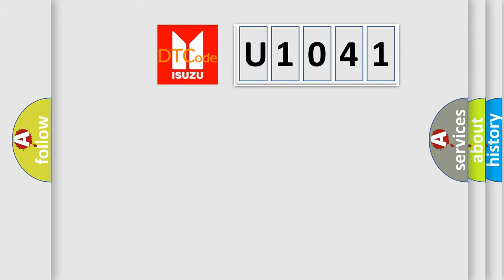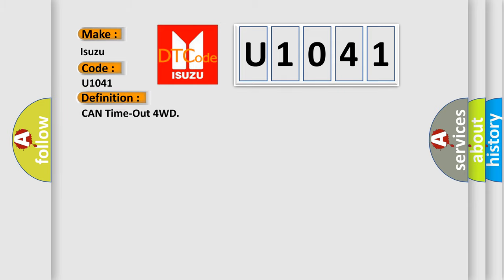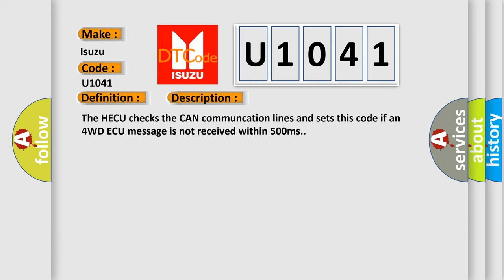So, what does the diagnostic trouble code U1041 interpret specifically for Isuzu car manufacturers? The basic definition is: CAN timeout for 4WD. The HECU checks the CAN communication lines and sets this code if a 4WD AQ message is not received within 500 milliseconds.